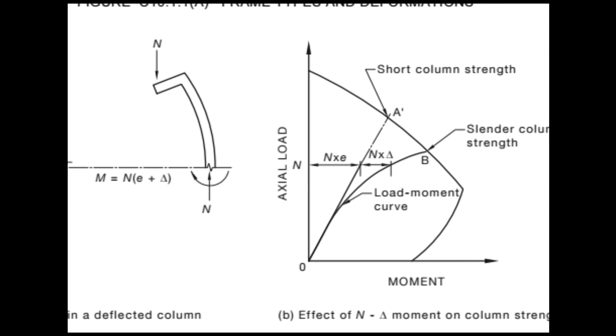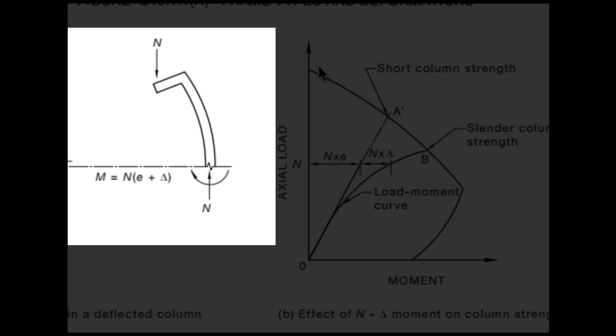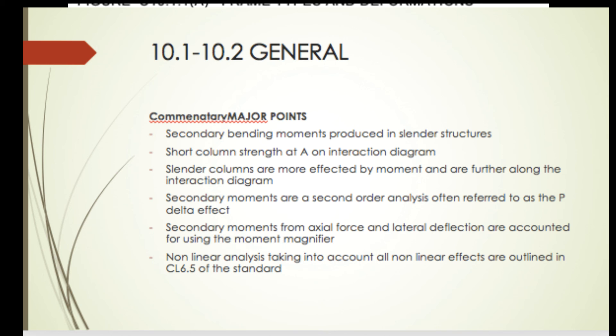Also, secondary moments are a second-order analysis, often referred to as the P-delta effect. So as the column sways a little bit, there'll be a force going down, and then a moment is created on its own axis. Also, secondary moments from axial force and lateral deflection are accounted for using the moment modification factor, which we'll get into.